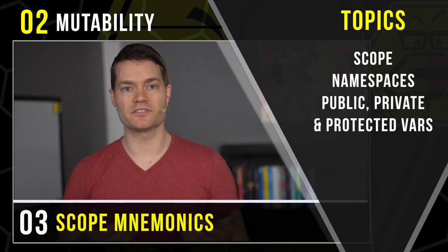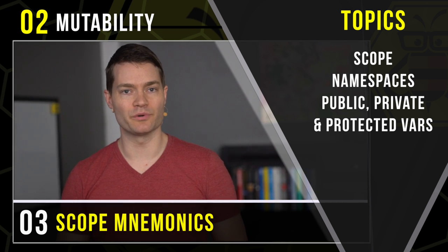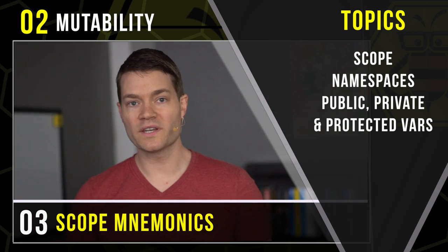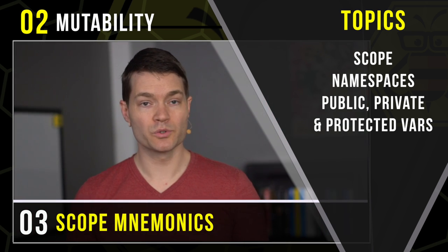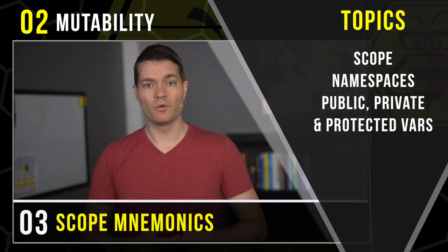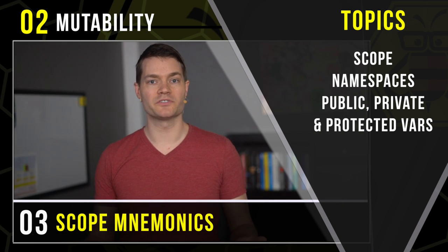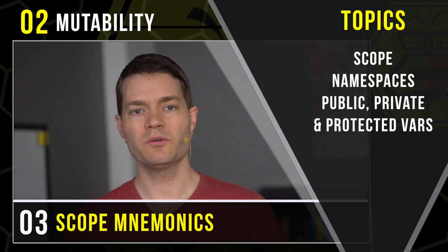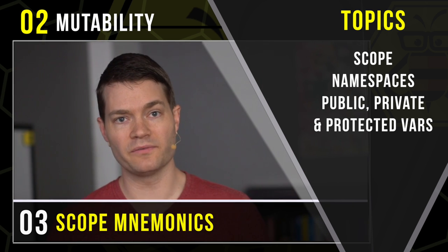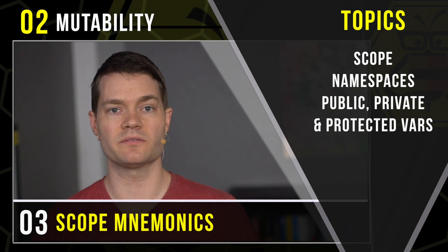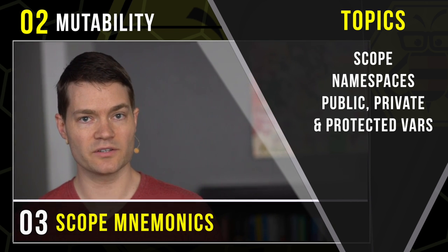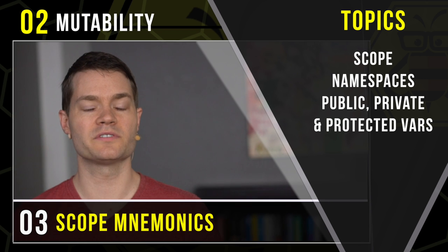First, we're going to talk about scope — what is scope and why is it important? Then we're going to talk about variables in the context of scope, what defines the rules of scope including the LEGB rules, and what's the difference between a variable's scope and a variable's lifetime. Then we'll move on to talking about namespaces, or what I like to call variable spaces.